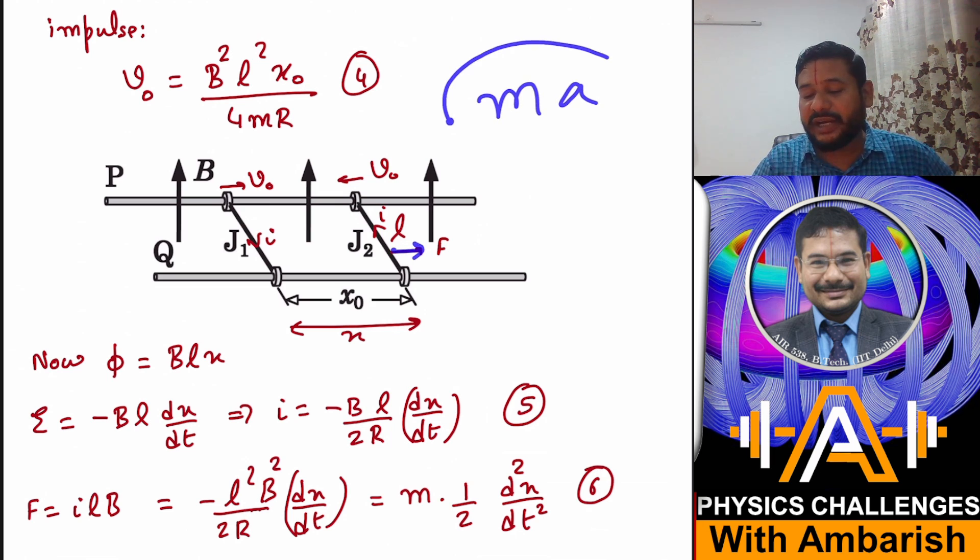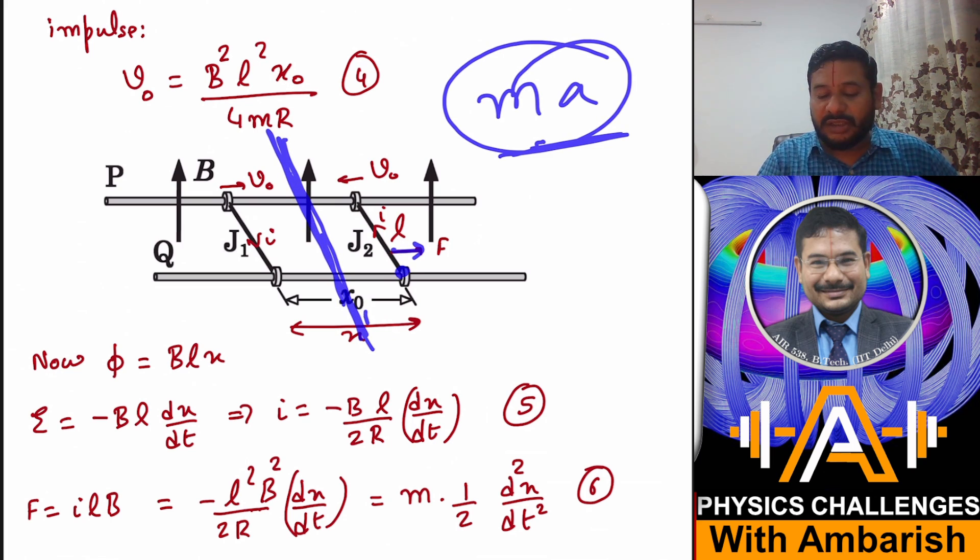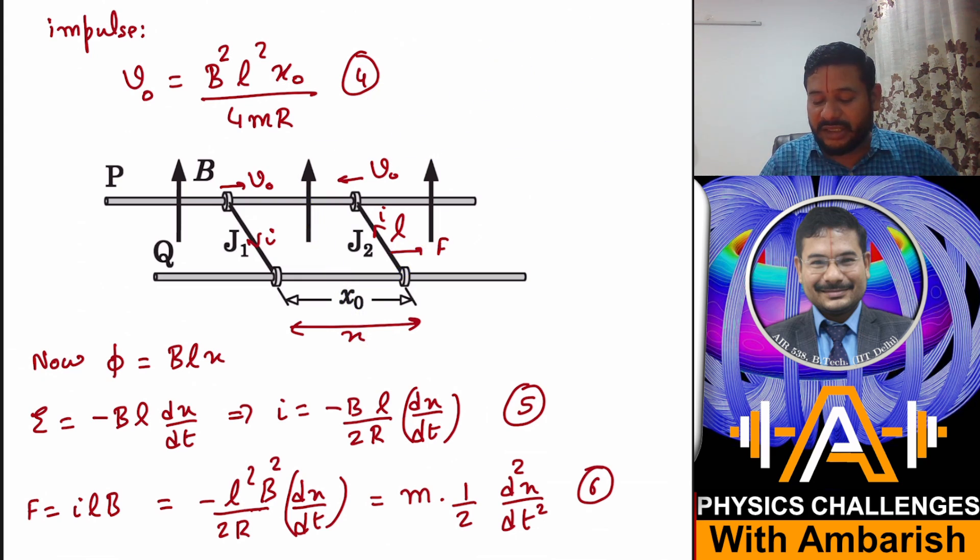Now this force must be equal to what? This should be equal to mass times acceleration. But think - actually if you consider the coordinate of this jumper from the midline, this will be actually x/2, so its acceleration is not d²x/dt² but it's half d²x/dt².